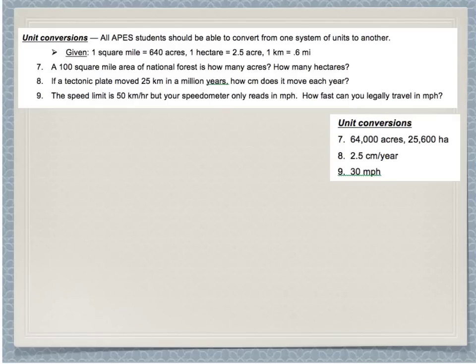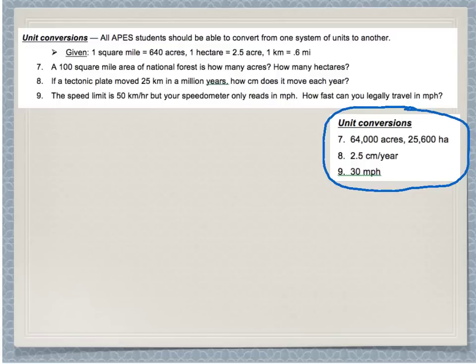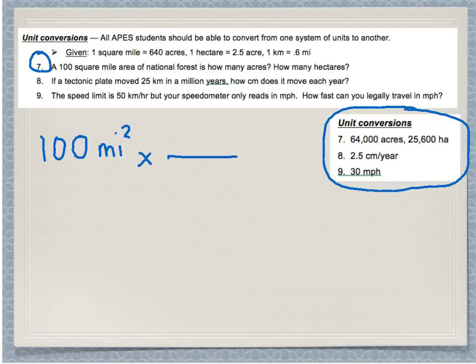The next set is unit conversions. We're going to use fractions to cancel out units and convert from one to the other. We'll be working with areas: square miles, acres, and hectares, with some conversion factors given to you. Here is the answer key for each of these, so double check to make sure you get the correct answer. I'm going to go through number seven with you. We have a 100 square mile area forest and I want to know how many acres that is first.